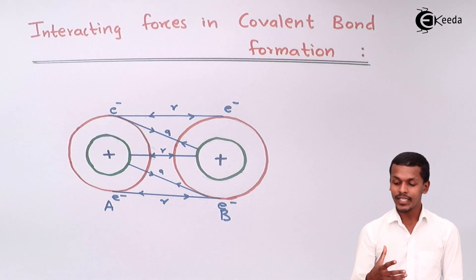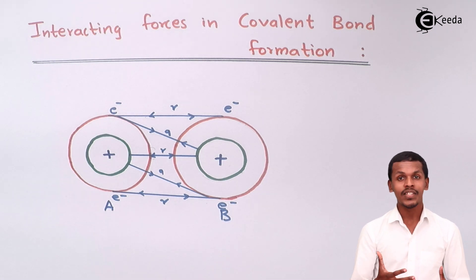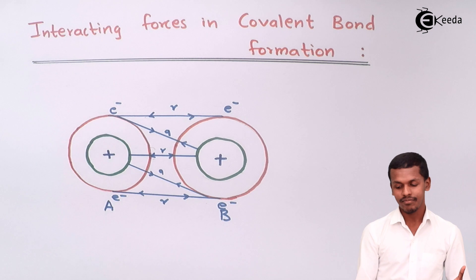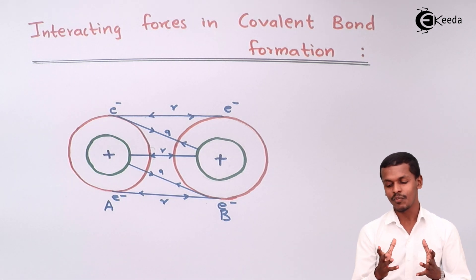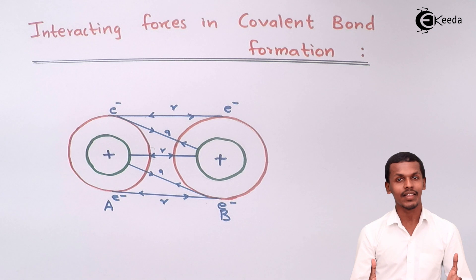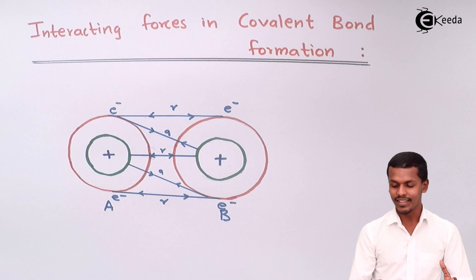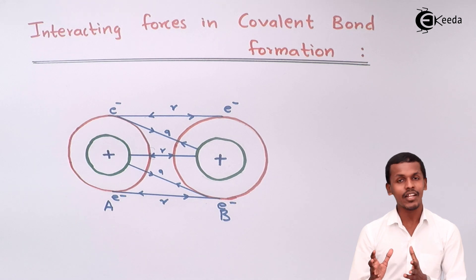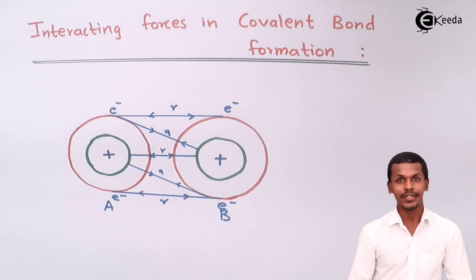But what if the force of repulsion is more compared to the force of attraction? In that case, A and B will not form a bond with each other, and they will stay in atomic form even though having certain conditions. This is the interacting force I am talking about, and now let us talk about the energy.